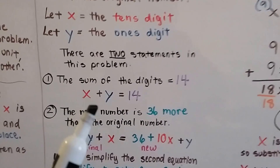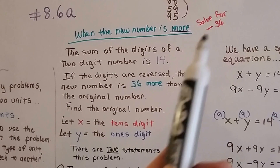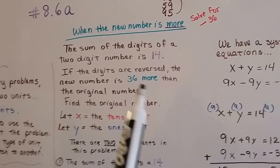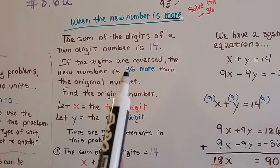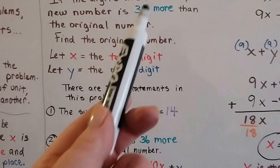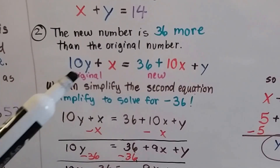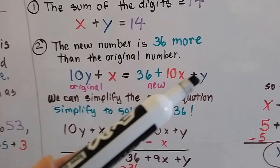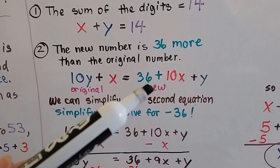When you have to solve one of these digit problems where it's an amount more, you want to solve for a negative version of it. So if it says 98 more, you want to solve for negative 98. If it's 36 more, we want to solve our equations for negative 36. So when it says more, think opposite — you're going to solve for a negative version of that amount. So the new number is 36 more than the original number. The original number is 10x plus y, and we're going to add 36 to it to get the new number.